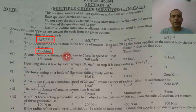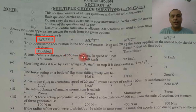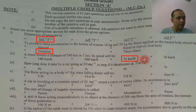A truck covers a distance of 36 km. How much speed in 5 hours? So you divide it by 5, and I believe we have 72 km per hour.